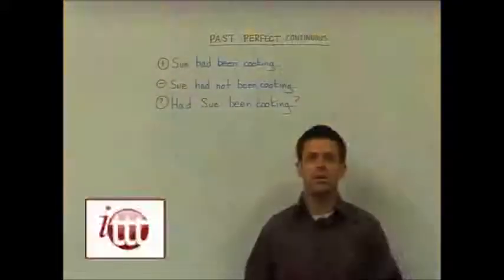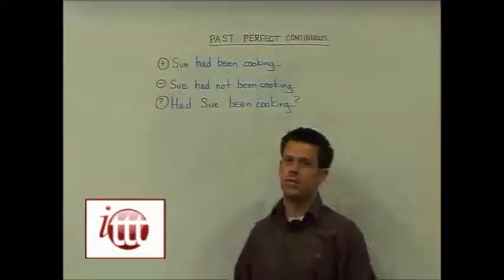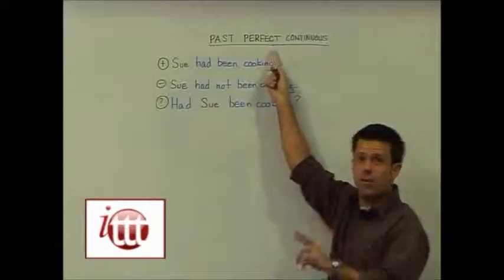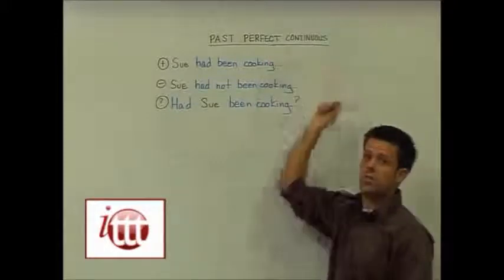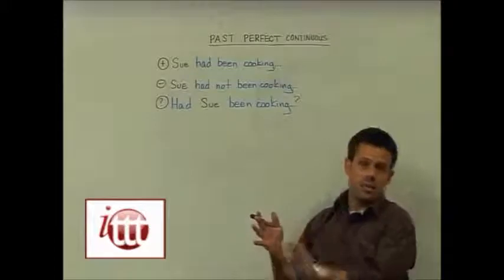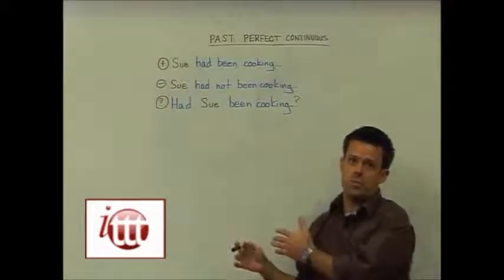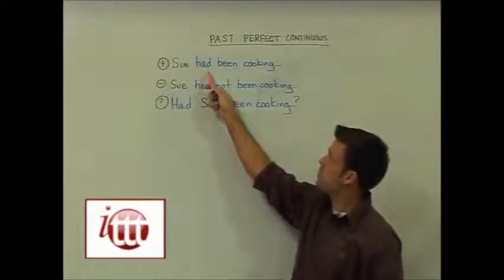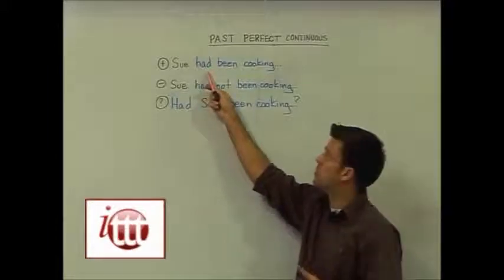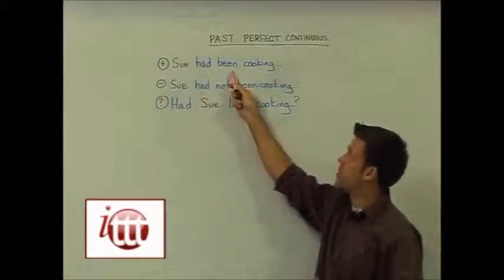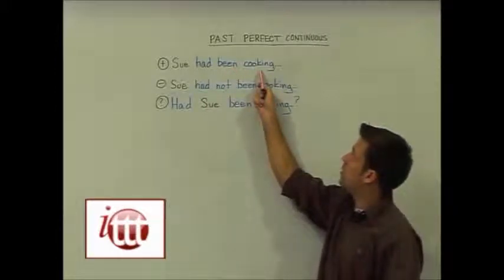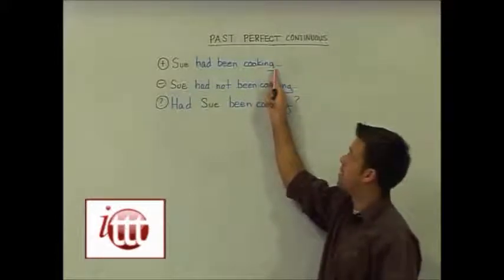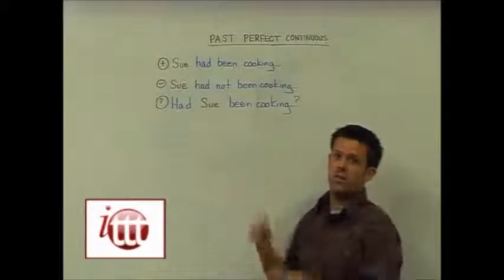Now let's look at the past perfect continuous tense. We'll be talking about two past actions, focusing on the fact that one of those actions had been continuing at another point in the past. To form this tense, we need two auxiliary verbs: 'have' conjugated into the past — 'had' — and the auxiliary verb 'be' with the present participle form of the main verb (verb + -ing), with 'be' also conjugated into the past as 'been'.